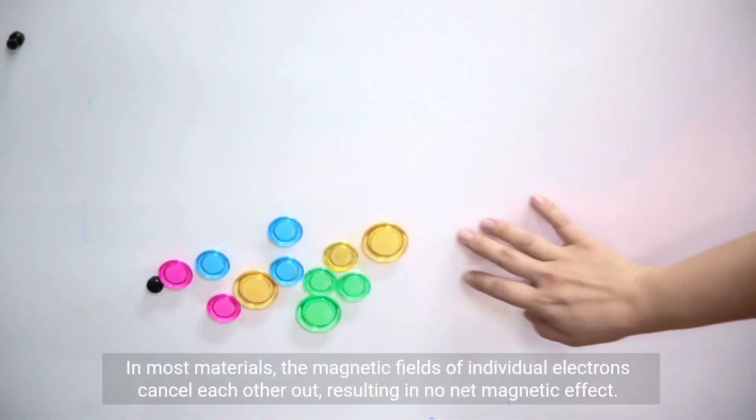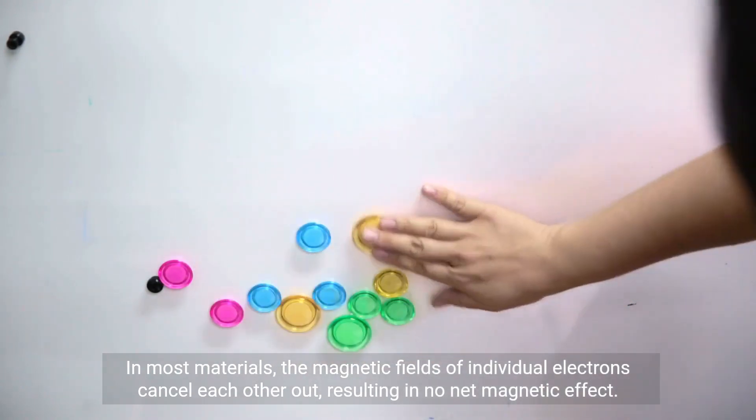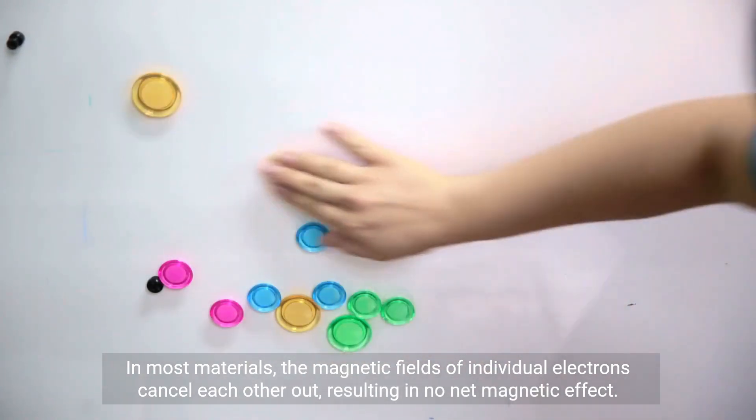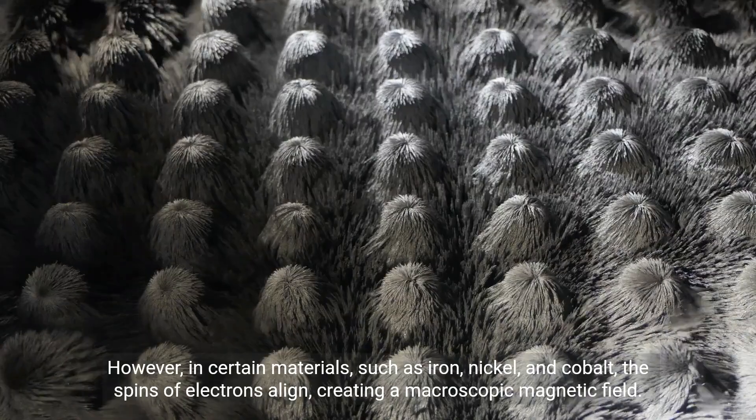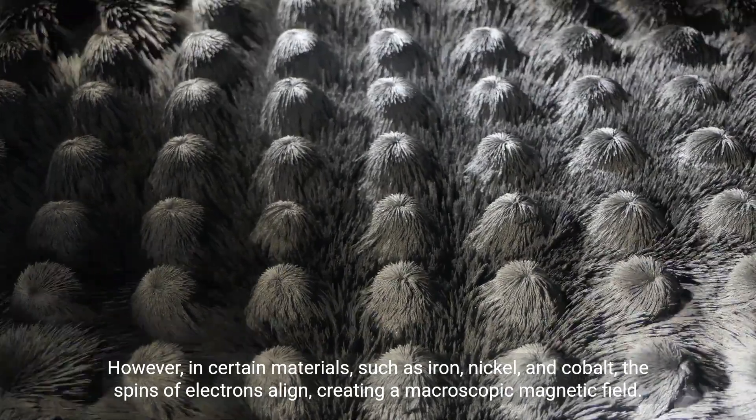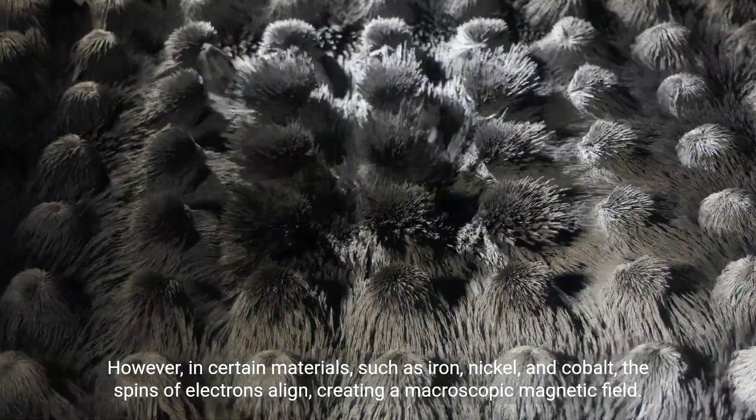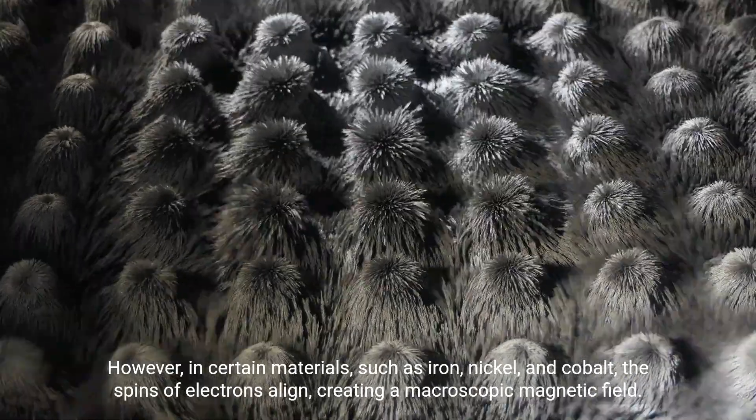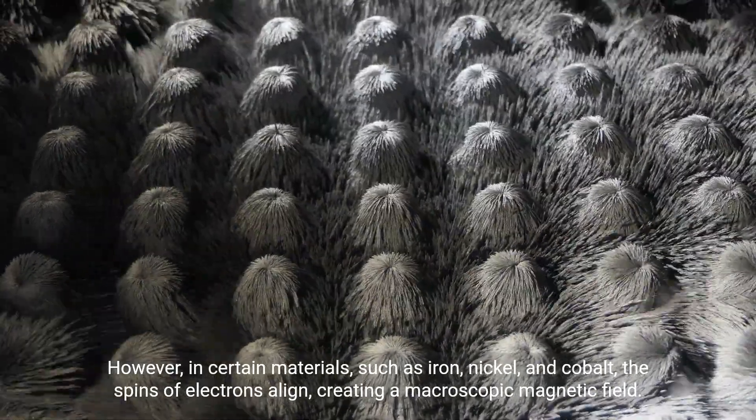In most materials, the magnetic fields of individual electrons cancel each other out, resulting in no net magnetic effect. However, in certain materials such as iron, nickel, and cobalt, the spins of electrons align, creating a macroscopic magnetic field.